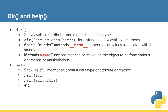I'll show you this in action, but want you to be aware that special dunder methods, as they're called, with these underscores surrounding the method name, are properties or values associated with the string object. And then just methods, which are shown as the name of a method, are functions that can be called on the object to perform various operations or manipulations. We did talk about several of these a few lecture videos back.